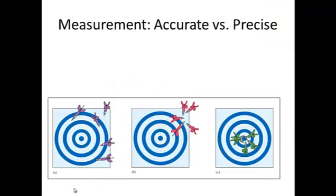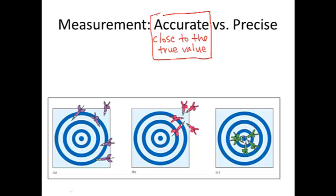Now, a couple other things to look at in measurement. Some measurements are accurate. Some measurements are precise. Some measurements have both accuracy and precision. We're going to discuss this. So being an accurate measurement is one that is close to the true value. Precise is that we have multiple measurements that are close together.